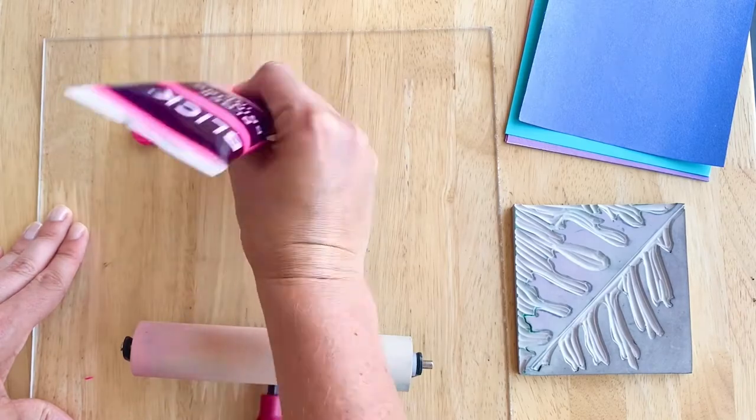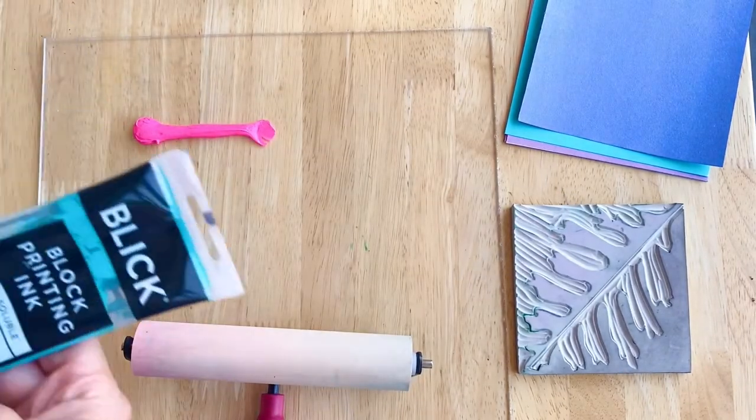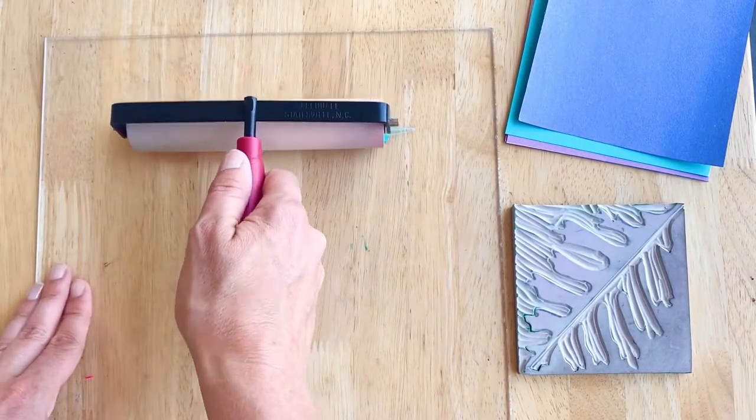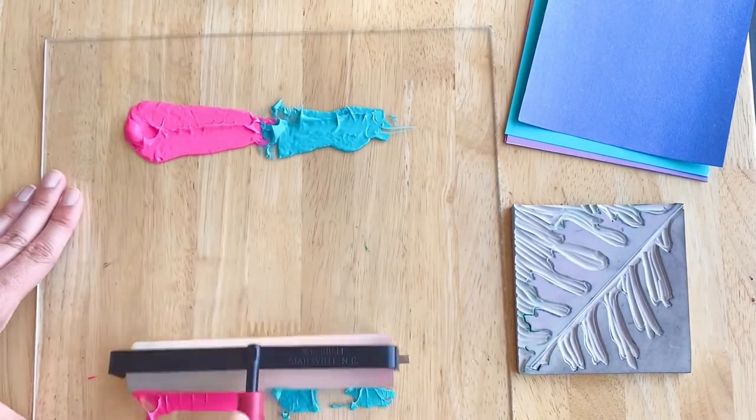Now for the fun part, I'm rolling out a two color blended slab here and you just want to dunk your brayer in the ink and then roll out the ink. It should make a beautiful sticky sound.